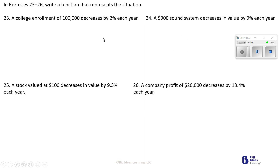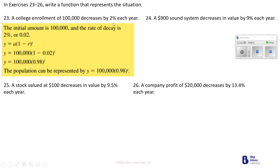Number 22 is yours to do. Number 23: a college enrollment of 100,000 decreases by 2%. To write this function, we take 100,000 and multiply it to 1 minus 0.02, which gives us 0.95 to the T power. So the function is 100,000 times 0.95 to the T power.